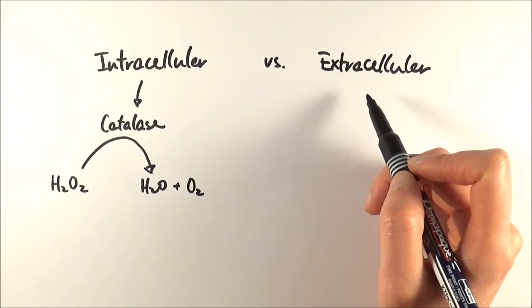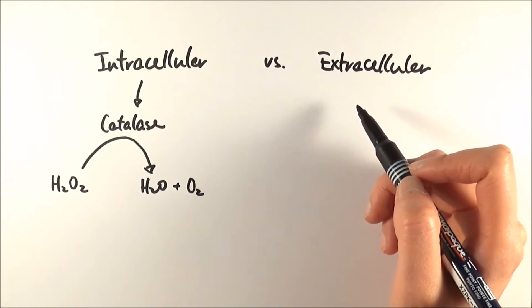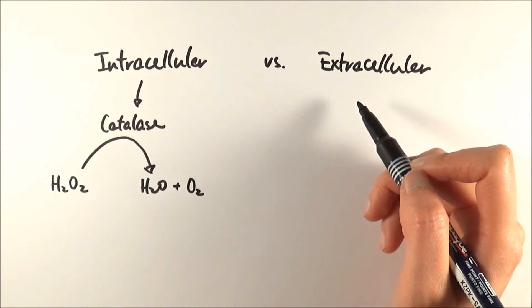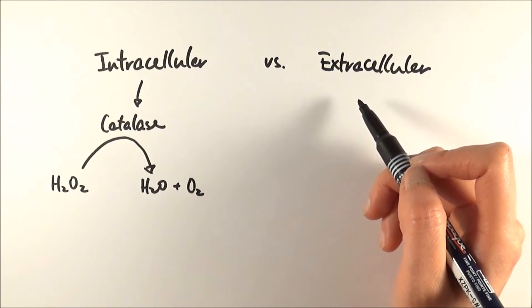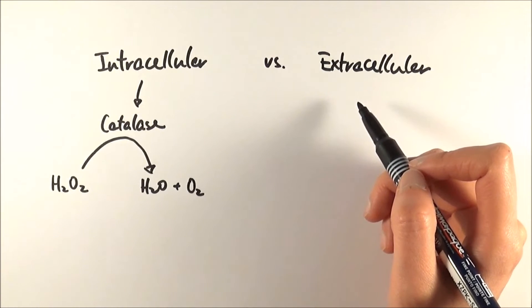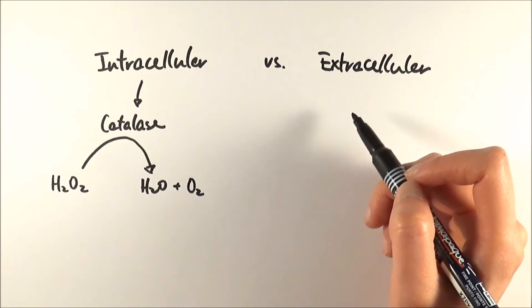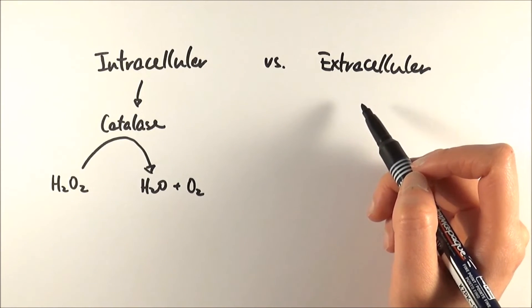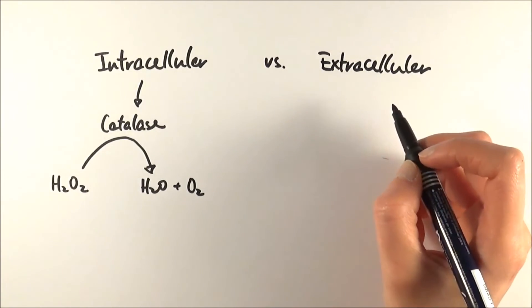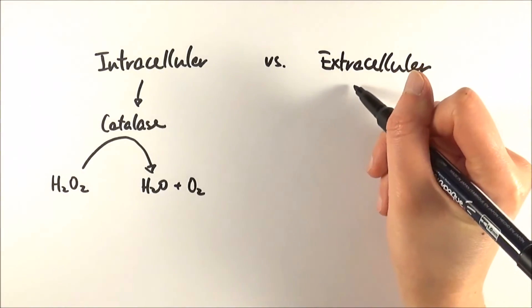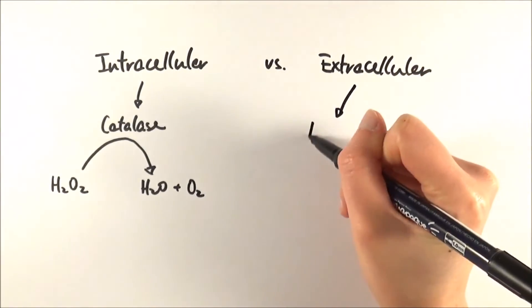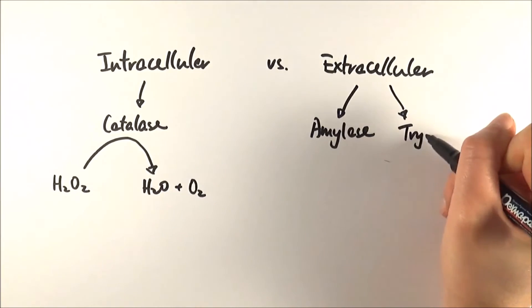Now, extracellular enzymes will be the ones that are released out of the cell. They're first made within a cell through protein synthesis, transcription, and translation, and then packaged and processed, released outside the cell. There are two specific examples and they are both digestive enzymes: amylase and trypsin.